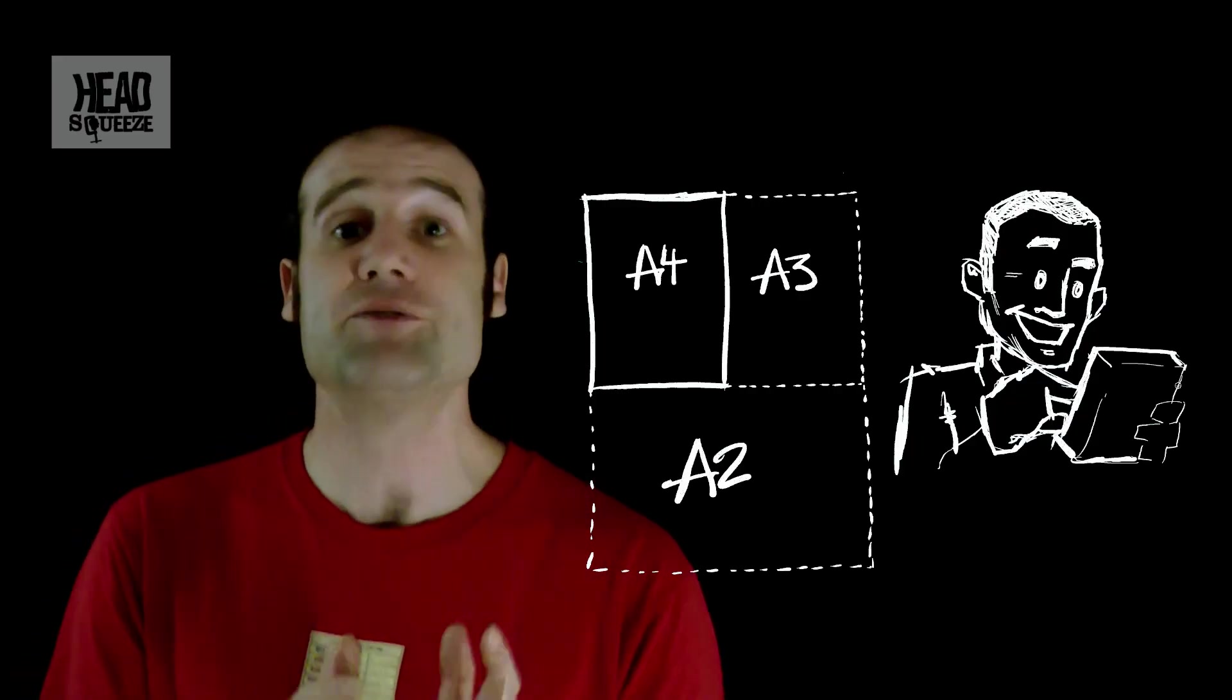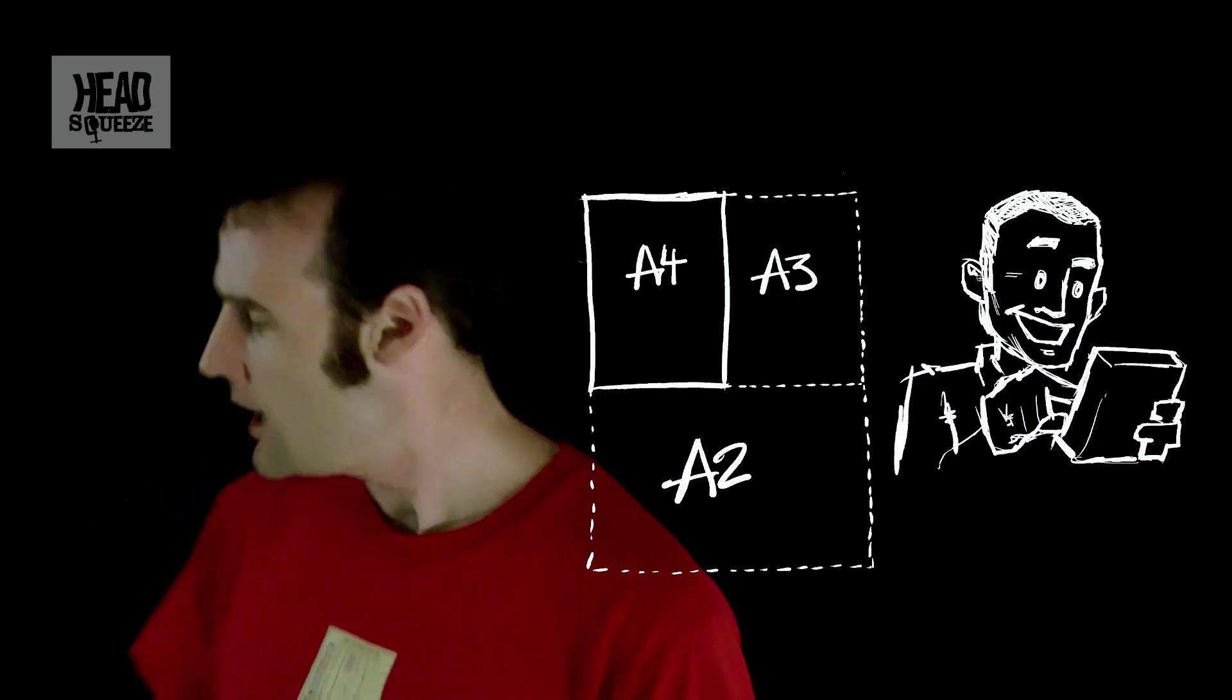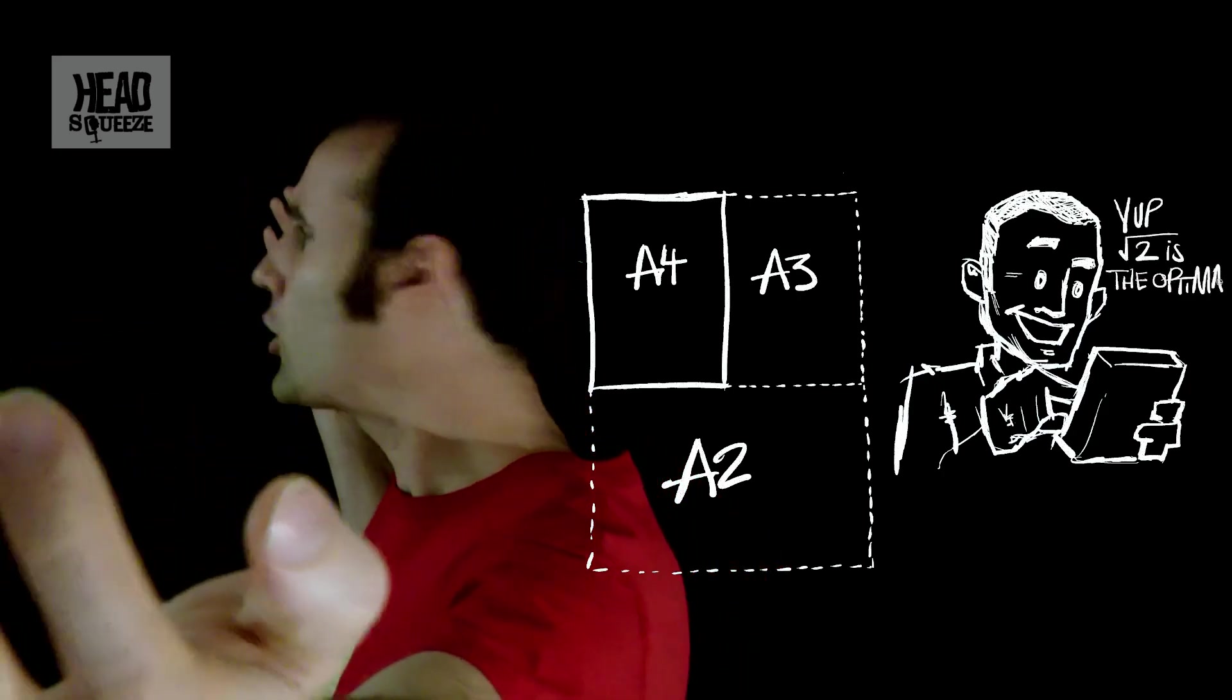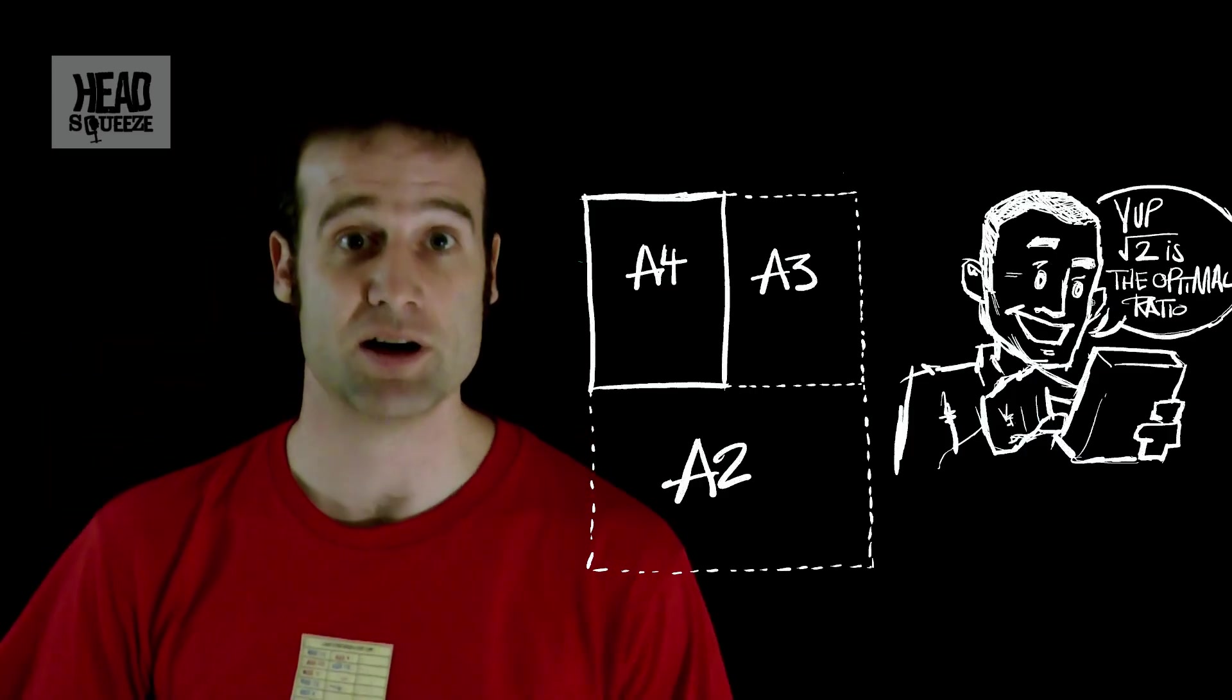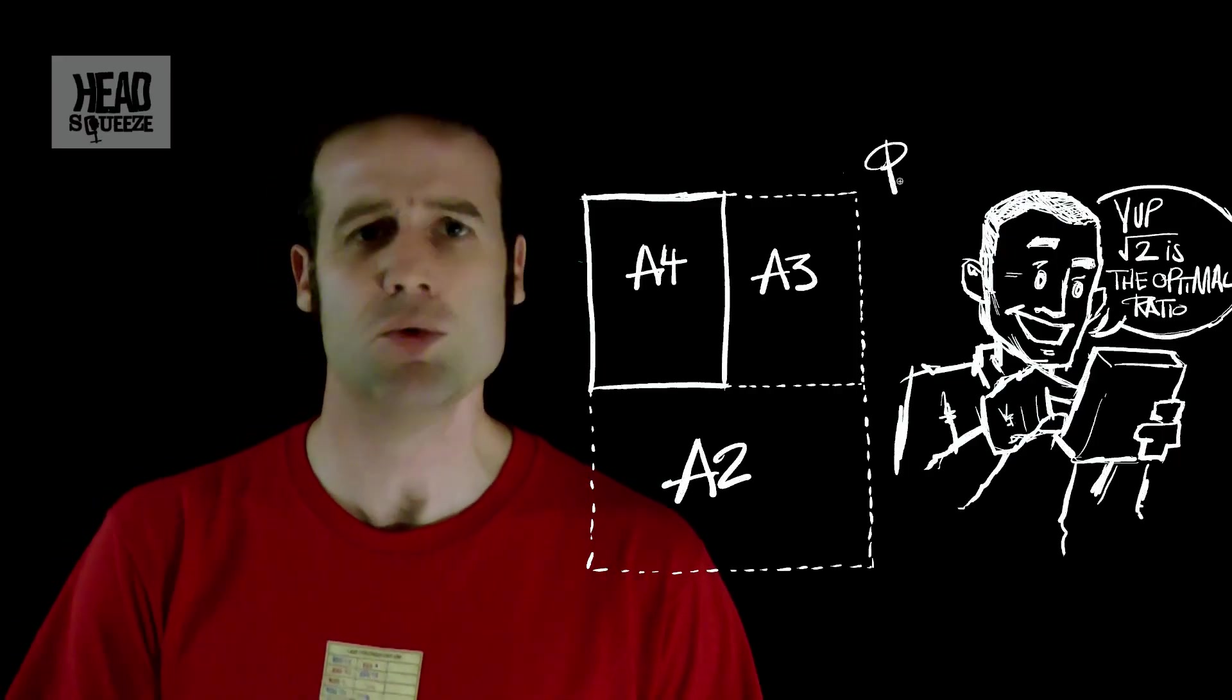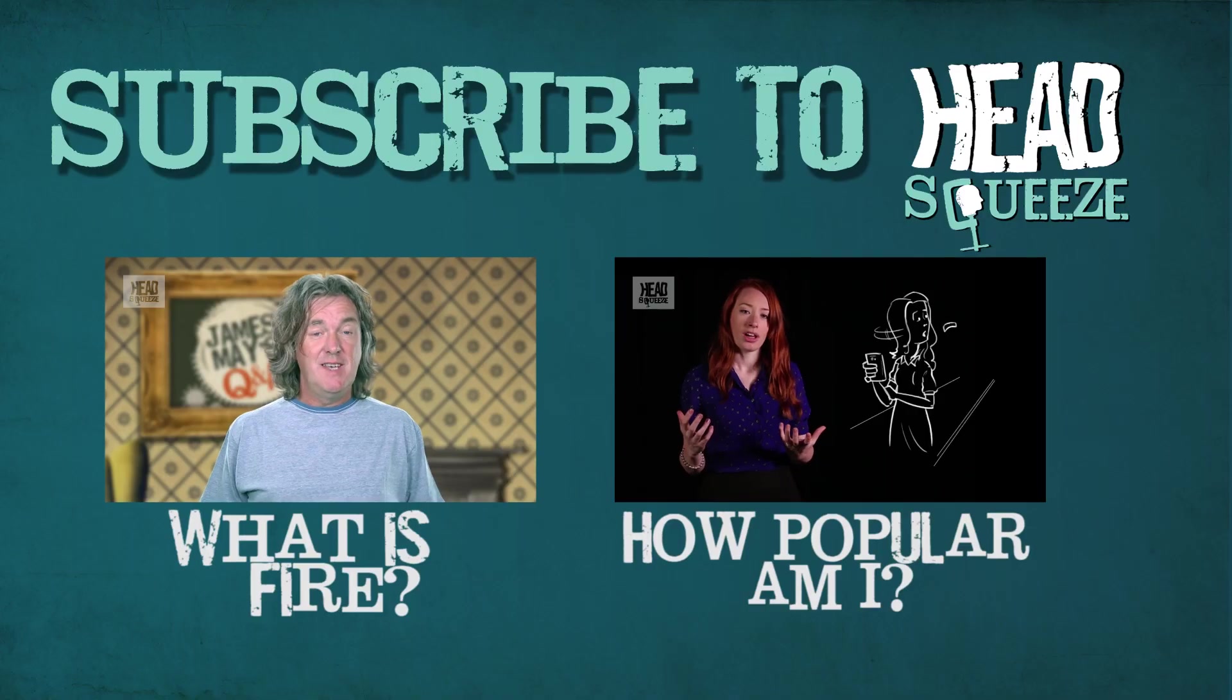The square root of 2, the whole A4 paper scale wasn't just plucked out of the air. Someone didn't just go, actually, you know what, maybe from there, from there, can I just get like a quarter of that? No, it was very carefully calculated to be the optimal ratio for paper sizes. And that's why the A4 paper scale is the only rational, irrational choice when it comes to paper sizes.